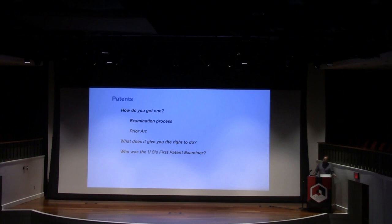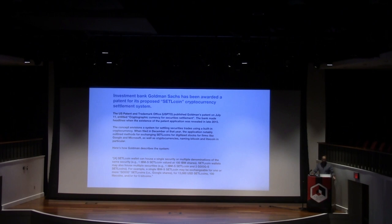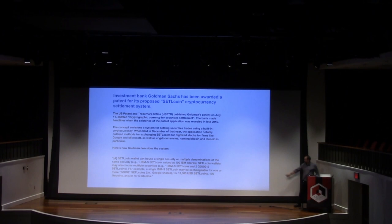Who was the first U.S. patent examiner? Thomas Jefferson. The very first patent was issued on potash in 1790 — patent number one. We're over 10 million now. Here's an example of patent number 9,700,000-something, which was a patent I obtained for Goldman Sachs for its Settlecoin cryptocurrency settlement system. We describe a claim system intersecting how securities trading works with the power of the blockchain to automatically settle and clear trades.